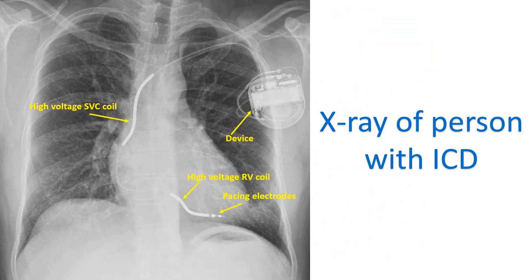CRT alone is now redesignated as CRT-P, or CRT with pacing alone. This is because there is another device known as CRT-D, in which CRT is combined with an ICD. ICD is short for implantable cardioverter defibrillator, used to automatically shock the heart back into action in case of life-threatening heart rhythm disorders. This x-ray shows an ICD with high voltage shocking coils within the heart. In CRT-D, shocking leads — which are thicker, high voltage leads — are included along with the pacing leads of CRT-P.